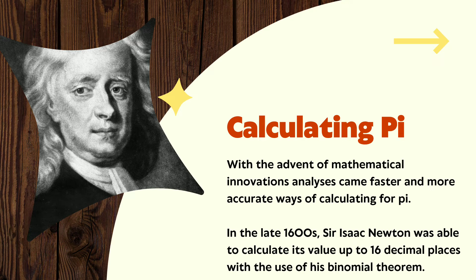Sir Isaac Newton has a great role in calculating the value of pi. He used the binomial theorem and he was able to calculate its value up to 16 decimal places.